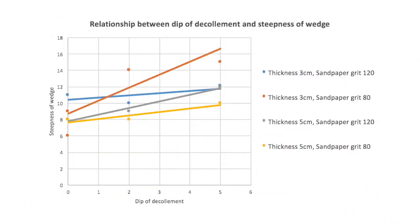For each line on the graph, the thickness of the original sand layers and sandpaper grits are kept constant. Across all experiments, we see a general trend where the steepness of the wedge increases as we increase the dip of the decollement.